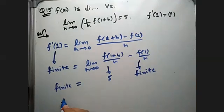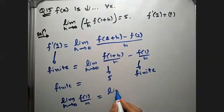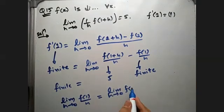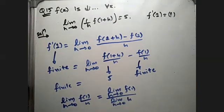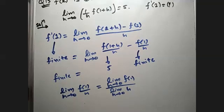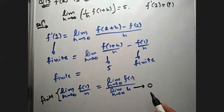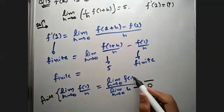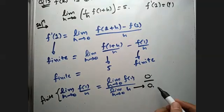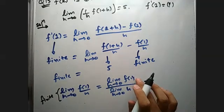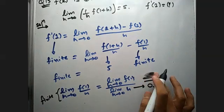Now limit h tends to 0, f of 1 by h, that will be limit h tends to 0, f of 1 divided by limit h tends to 0, h. Here you should get a finite answer. Now here, limit h tends to 0, 0, that is 0. So when will you get finite answer? When this is 0, then 0 by 0 form comes, then finite answer comes. Because 0 by 0, you can simplify. If you are not getting 0, other than 0 you are getting, right, then you cannot bring finite answer here.